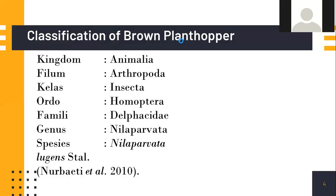The classification of the brown plant hopper: Kingdom Animalia, Phylum Arthropoda, Class Insecta, Order Homoptera, Family Delphacidae, Genus Nilaparvata, Species Nilaparvata lugens.